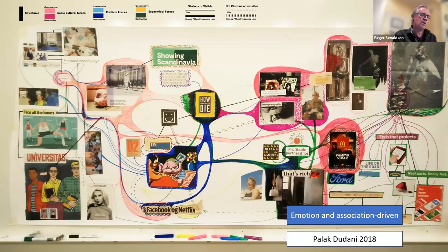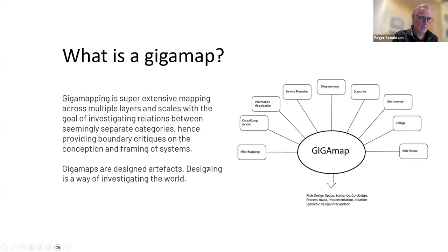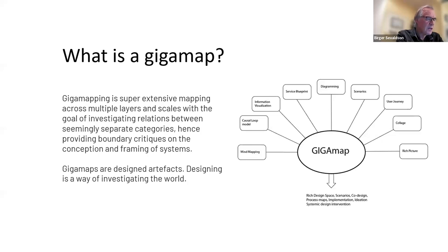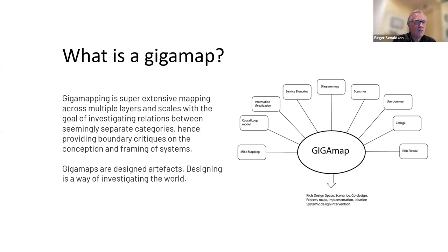It's by Palak Doudani, one of the members of the SDA board. So what is the Giga map anyway? Giga mapping is super extensive mapping across multiple layers and scales, with the goal of investigating relations between seemingly separate categories and phenomena, hence providing boundary critiques on the conception and framing of systems. Giga maps are most of all design artifacts — designing is a way of investigating the world. The diagram indicates that Giga mapping is not there to replace any other type of information visualization, but is a device where you can relate all those and draw connections between them.